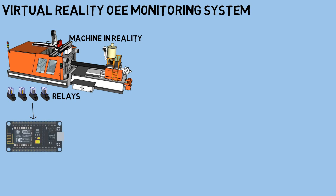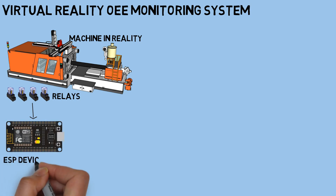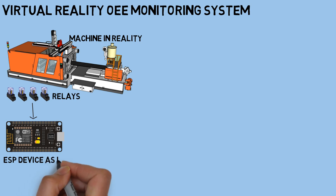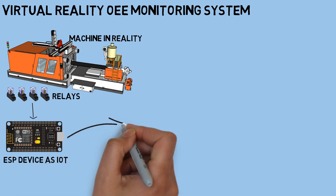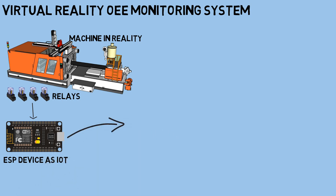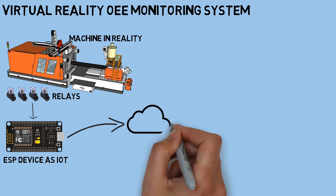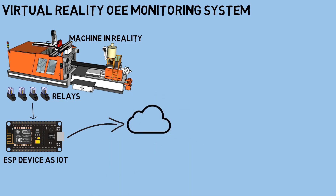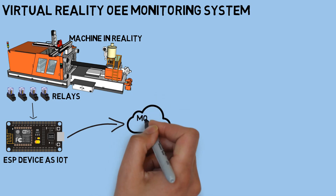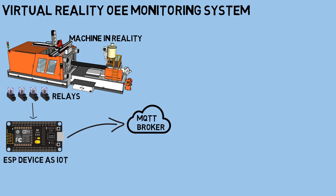We connect the relays to an ESP IoT device. We can also use another IoT device such as Raspberry Pi or PLC. The ESP device is connected to an MQTT broker, and the signals from the relays will be published to the MQTT broker, so we use MQTT protocol as communication.